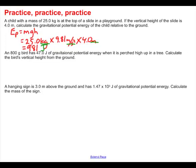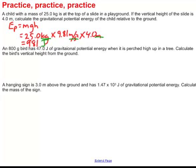Now we have an 800 gram bird that has 47.0 joules of gravitational potential energy when it's perched high up in a tree. Calculate the bird's vertical height from the ground. Now we're going to have to do a little bit of algebra on this one. The original equation is potential energy equals mass times gravity times height. But our problem is we've been given the potential energy, we want to figure out what is the height. How do I calculate height?